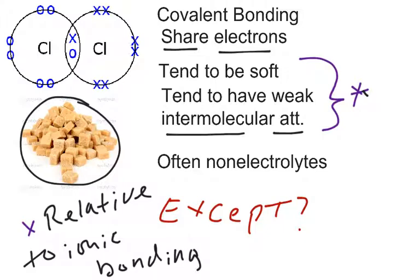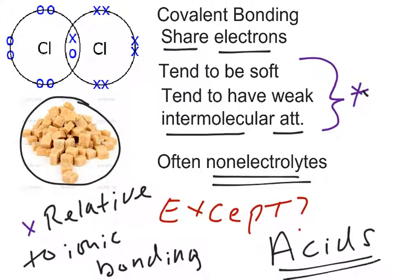Covalent compounds for the most part tend to be non-electrolytes, except which covalent compounds are electrolytes? Acids. And acids are found on what table? They're found on Table K.